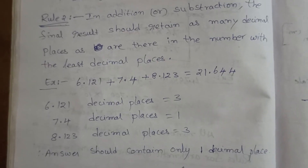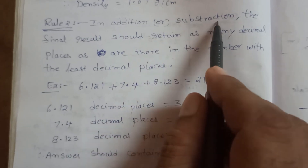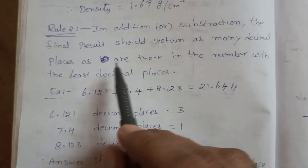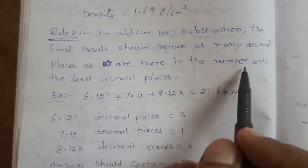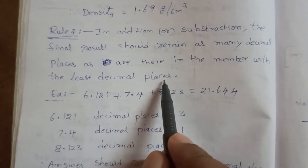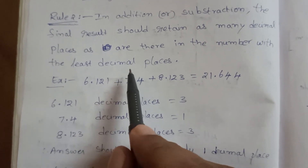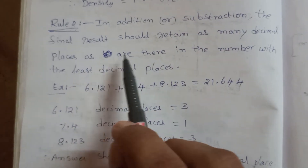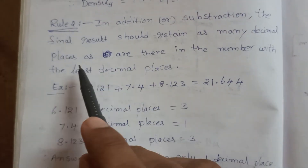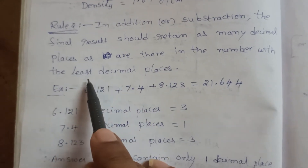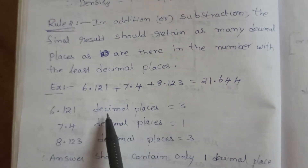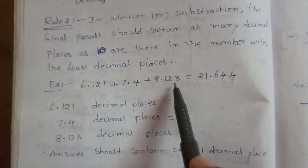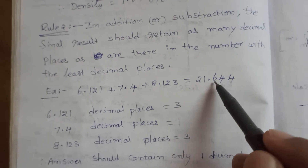Now the next rule — Rule 2: for addition and subtraction, the final result should retain as many decimal places as there are in the number with the least decimal places. For example, 6.121 + 7.4 + 8.123 gives the answer 21.644.